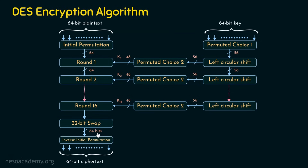This is also not yet the ciphertext. Recollect what we did at the start of the encryption process — the 64-bit plaintext was fed into the initial permutation. So we need to inverse it. The output of the 32-bit swap function is 64 bits, and these are given to the inverse initial permutation function, which inverses and then gives 64 bits — and these 64 bits are the ciphertext bits.